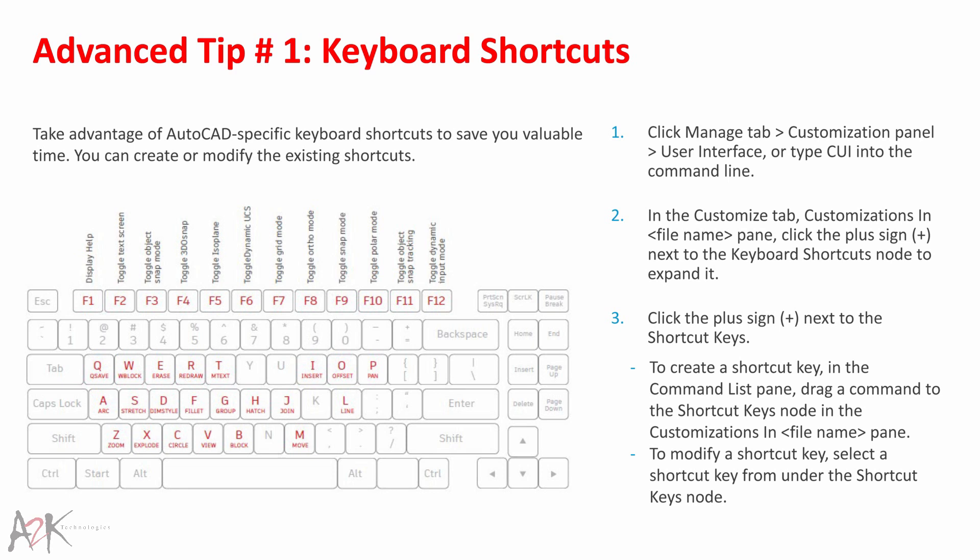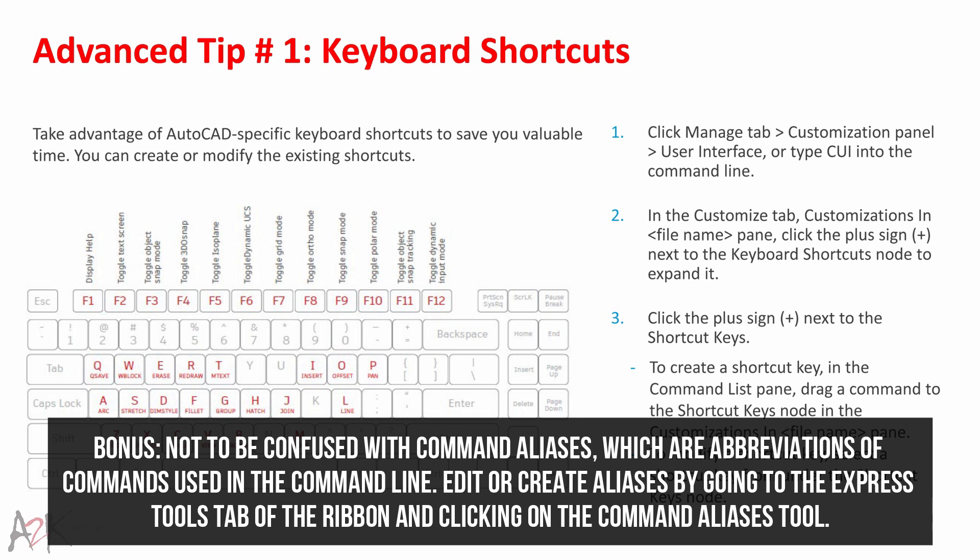In the Customize tab, expand the Keyboard Shortcuts node by clicking the plus sign, then click the plus sign next to Shortcut Keys. To create a shortcut key, drag a command from the command list panel to the Shortcut Keys node. To modify a shortcut key, select it from under the Shortcut Keys node. Bonus: not to be confused with Command Aliases, which are abbreviations of commands used in the command line — edit or create aliases by going to the Express Tools tab of the ribbon and clicking on the Command Aliases tool.